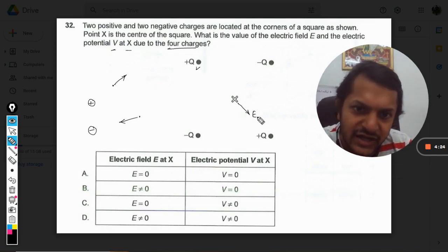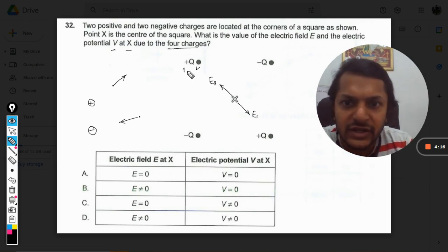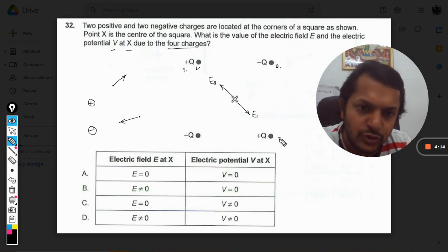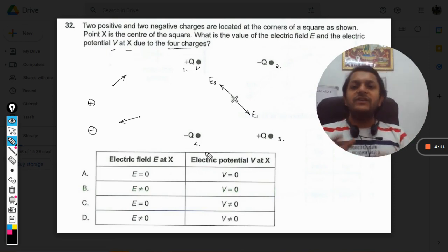So in this case, this positive charge will have an electric field here in this direction. I can call it E1. And this charge will have an electric field like this. I'm calling it E3. So this is charge number one, charge number two, three, and four.